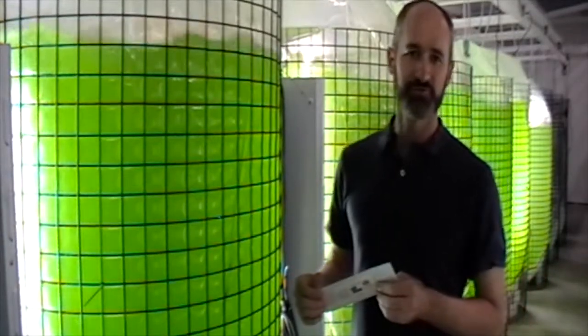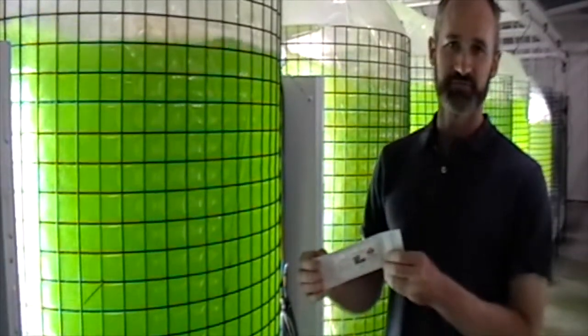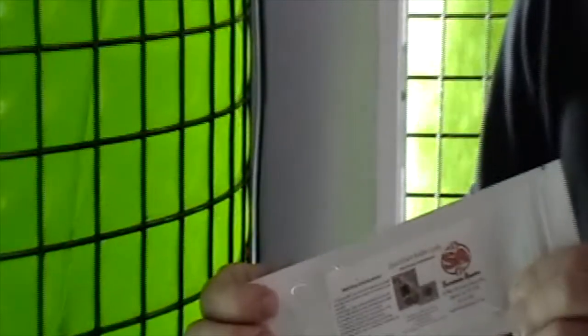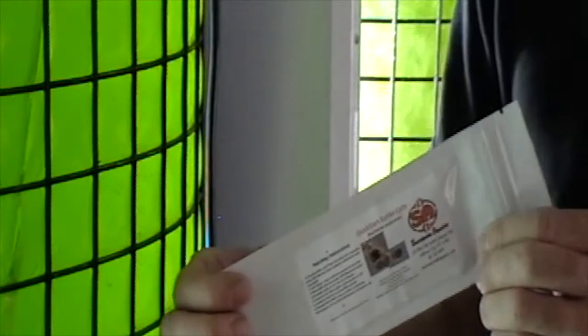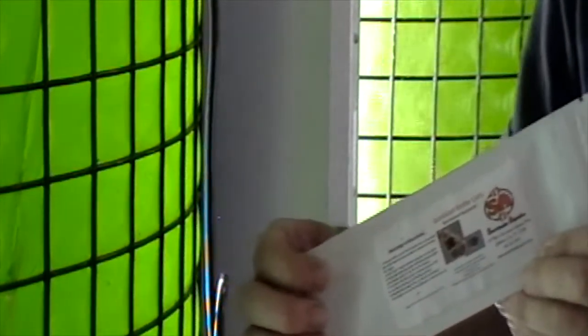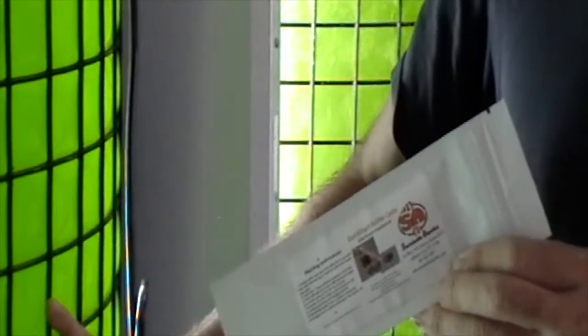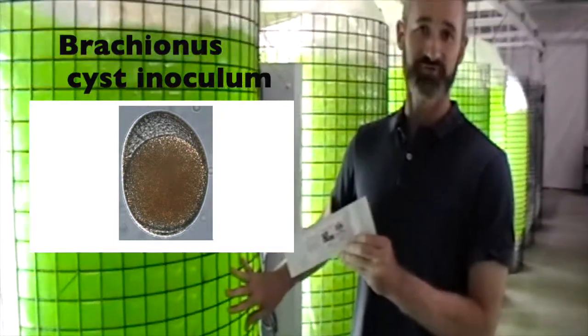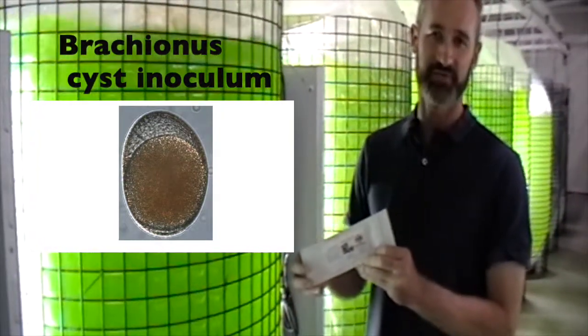When these reactors are first inoculated, we use resting eggs or cysts for rotifers. These are brachionus plicatilis cysts. In a small vial, there'll be approximately 5,000 cysts. This works on any scale. So for instance, this is a 1,000 liter reactor, but it's possible to inoculate a smaller or larger volume with the cysts and allow them the proper kind of growth.